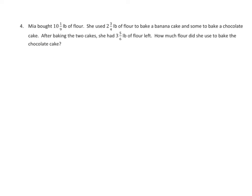This one is fairly straightforward. Mia bought 10 and 1 ninth pounds of flour. She used 2 and 3 fourths pounds of flour to bake a banana cake and some to bake a chocolate cake. After baking the two cakes, she had 3 and 5 sixths pounds of flour left. How much flour did she use to bake the chocolate cake?